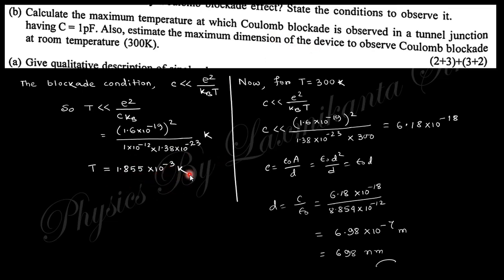Another question: estimate the maximum dimension of the device to observe Coulomb blockade at room temperature. When you use room temperature, the capacitance will be like that. Here the area will be d² also, because the quantum dot has uniform size like cubic. So this is ε₀d². So d = C/ε₀. Put this value, C and ε₀, you will obtain 6.98 × 10⁻⁷ m, which equals 6.98 nm. So this is the diameter of the material.